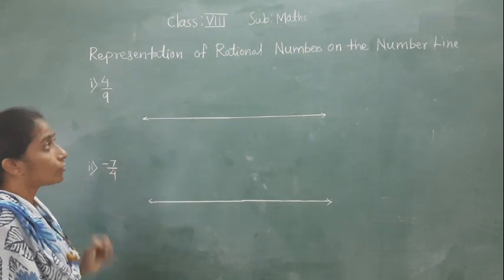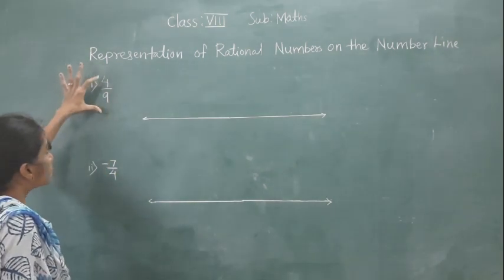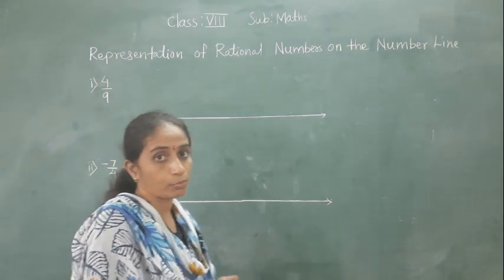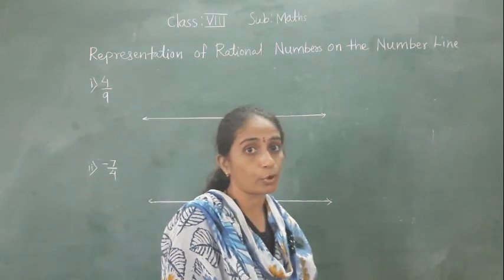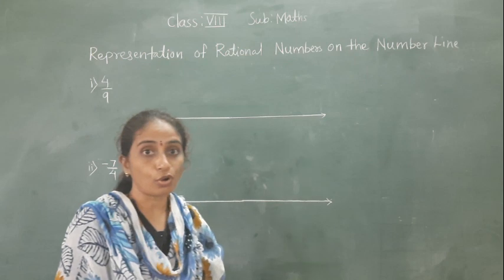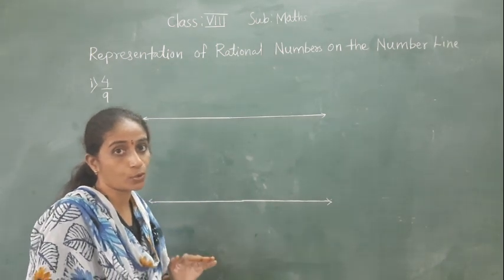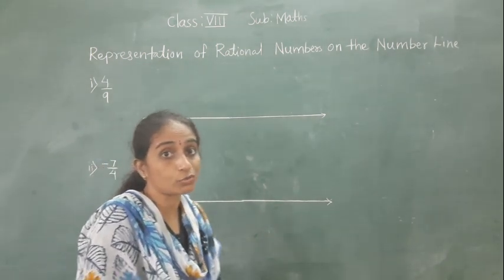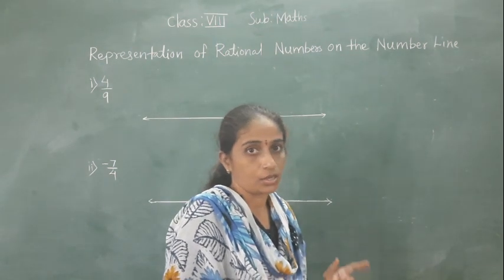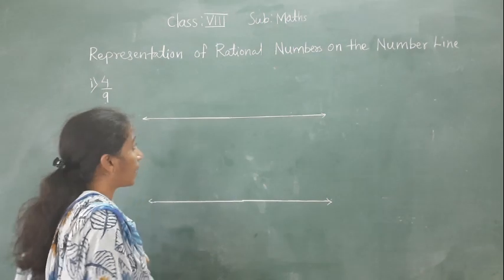Representation of rational number on a number line. The given number is 4 upon 9. 4 upon 9 means 4 of 9. So what we have to do — we have to make 9 equal parts. The denominator is 9, so we make 9 equal parts.